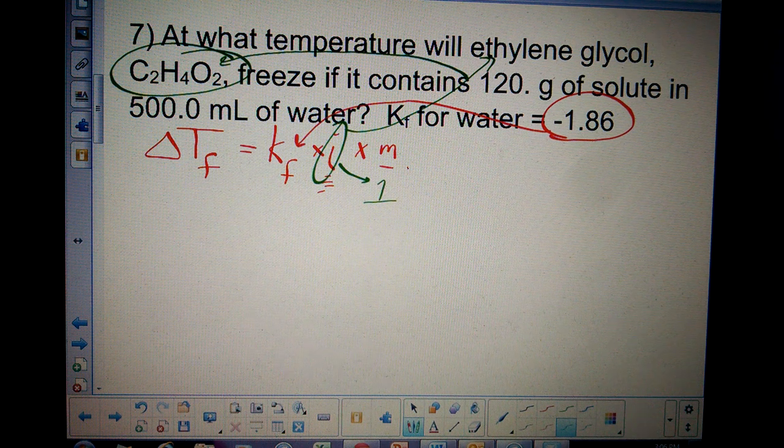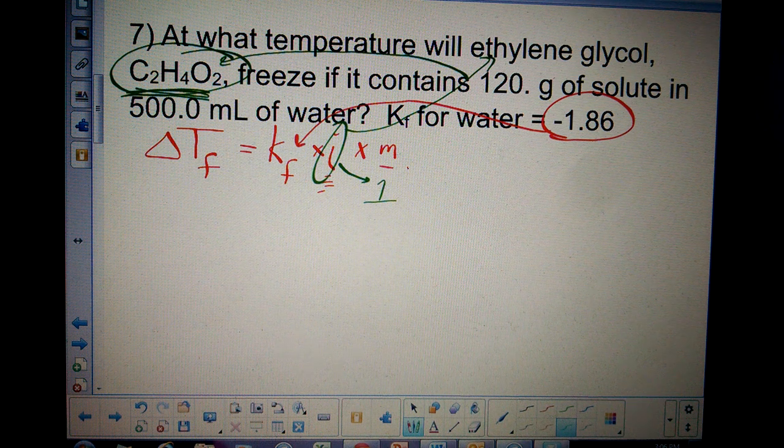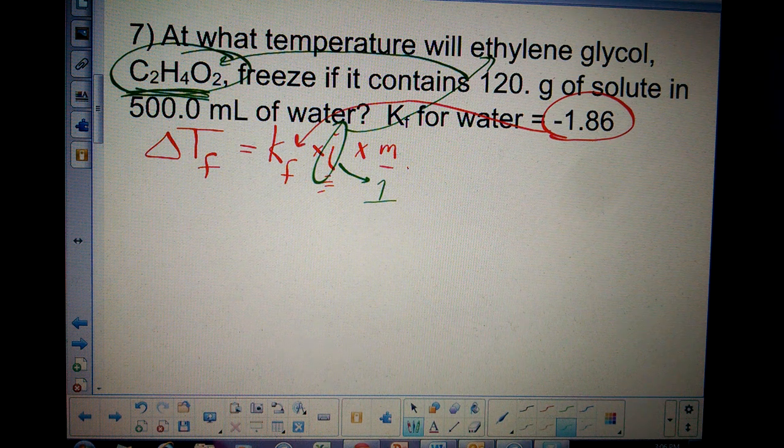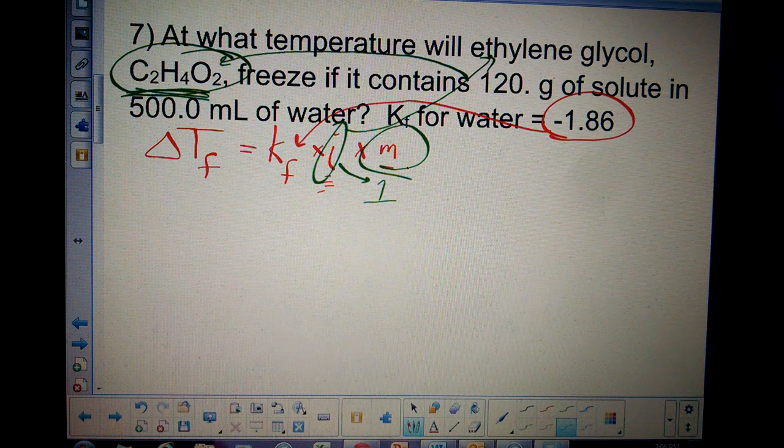For ethylene glycol, it does not break up into ions. It stays as C2H4O2. Now, the only thing weird is getting this molality part. Let's work through that.